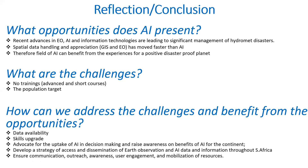In conclusion, what opportunities does AI present? Advancing AI and information technologies are leading to significant improvements in the management of hydrometeorological disasters. Spatial handling through GIS and earth observation is advancing rapidly alongside artificial intelligence. AI should benefit from this experience for a positive, disaster-proof planet. The challenges include lack of training: the target population sometimes receives the wrong training. We need to train more people to use artificial intelligence in geographic information systems, improve data availability, upgrade skills, and advocate for the adoption of AI, raising awareness of its benefits. We should also develop strategies for access to and dissemination of earth observation and AI data information throughout Southern Africa.